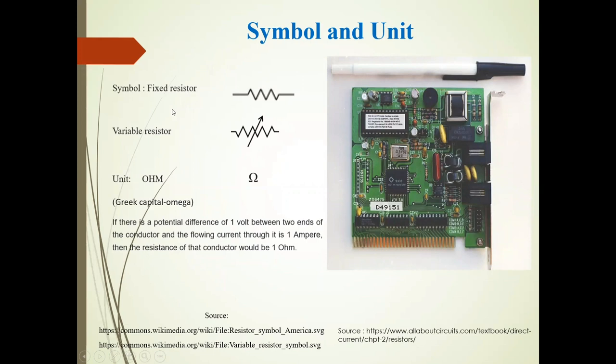Now symbol and unit of this resistor. Fixed resistor is denoted by this symbol, variable resistor by this symbol, and its unit is ohm. Now here the resistor is shown, it is used in this circuit.